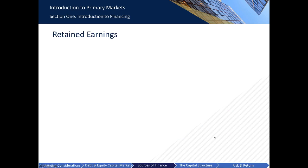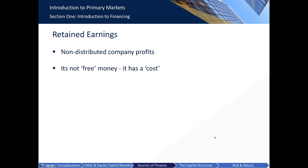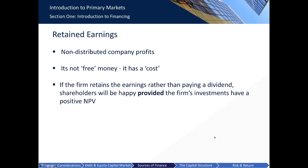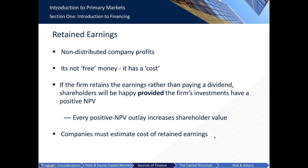Retained earnings represent the amount of net income left over after a company has paid out dividends to shareholders — in other words, the company's non-distributed profits. However, it is not free money; it has a cost. If the company retains earnings instead of paying a dividend, shareholders will be happy provided the firm's investments have a positive net present value. If not, they may sell their shares and look for a better investment. Every positive NPV outlay increases shareholder value. Retained earnings also reflect a company's dividend policy, illustrating its decision to reinvest profits or pay them out to shareholders.